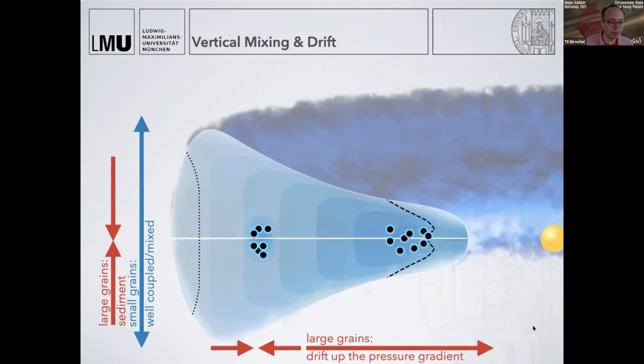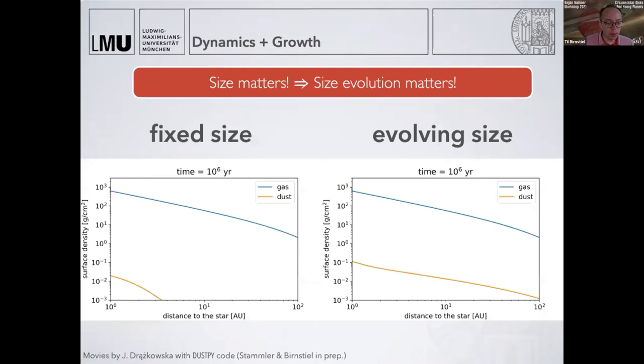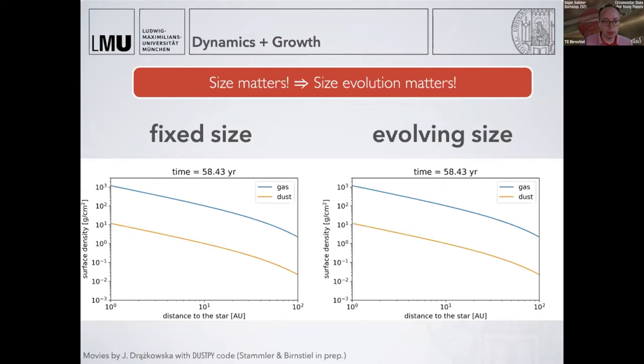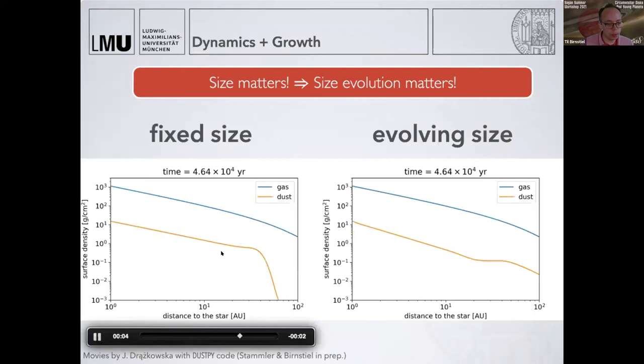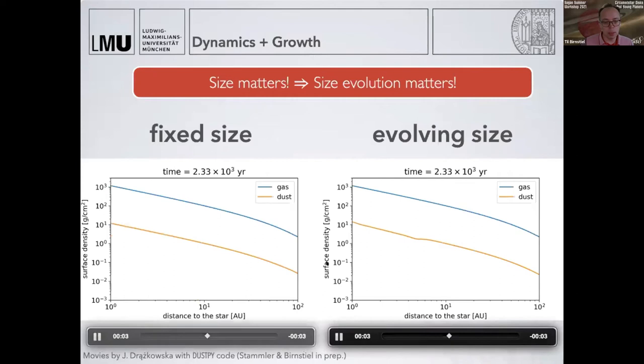Now that I hope you're convinced that particle size matters because particles evolve differently, you should also realize the size evolution matters. If a particle is always small or always large, it will behave differently from a particle that starts small and becomes large. I'm showing this in these two simulations. These are two identical setups of dust evolution, and you see how the surface density evolves. In the left case, particles have always the same size, and you see the evolution is very different from the right, where particles start small and then grow and move as they grow.